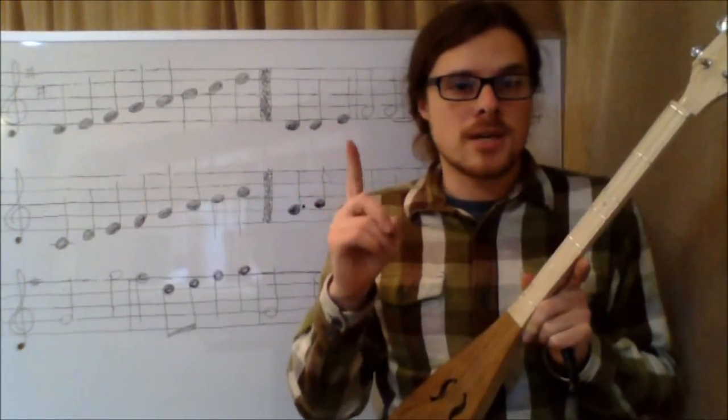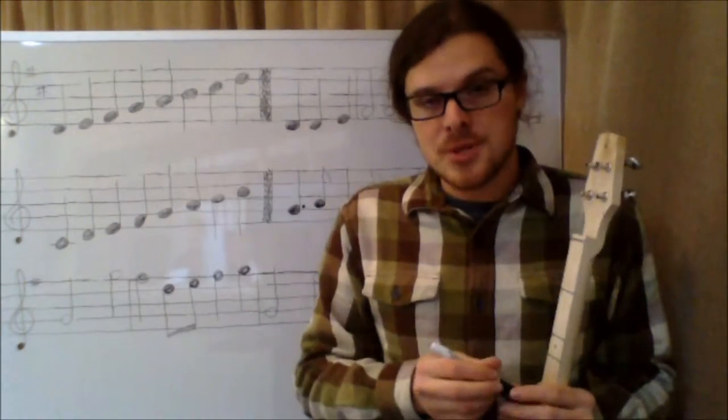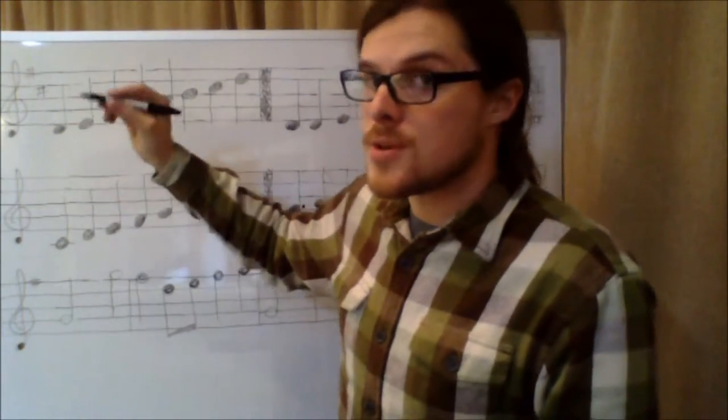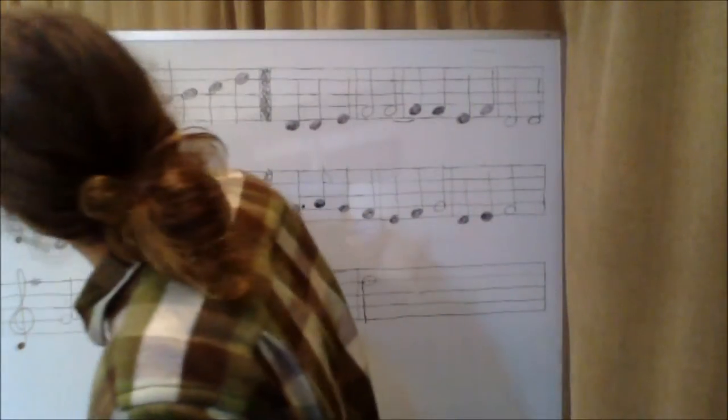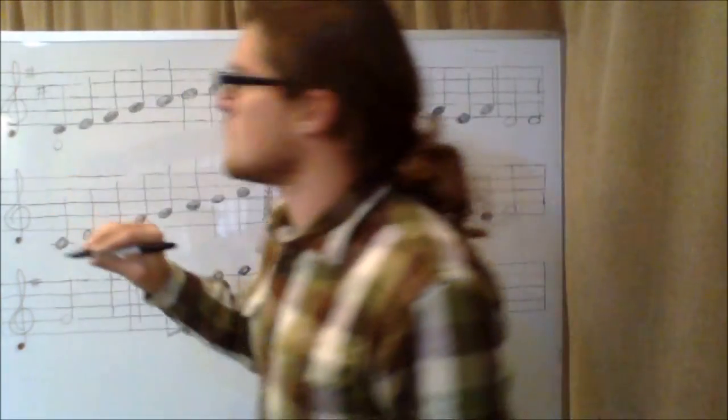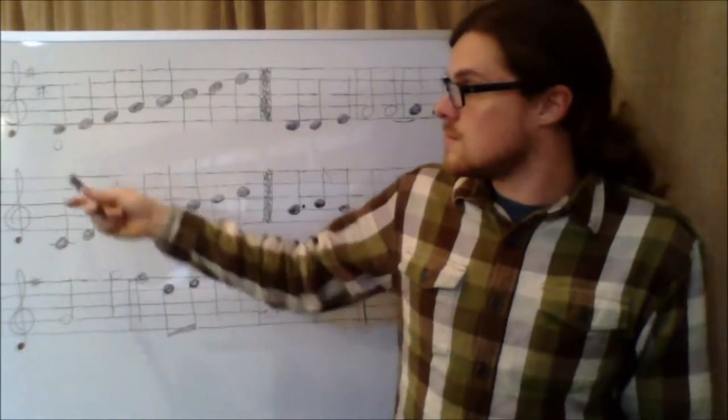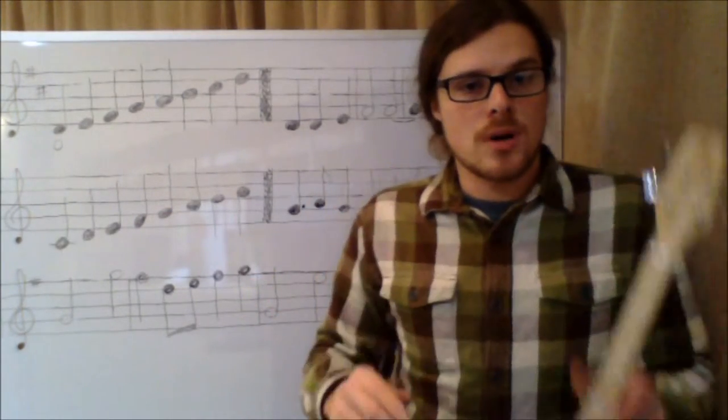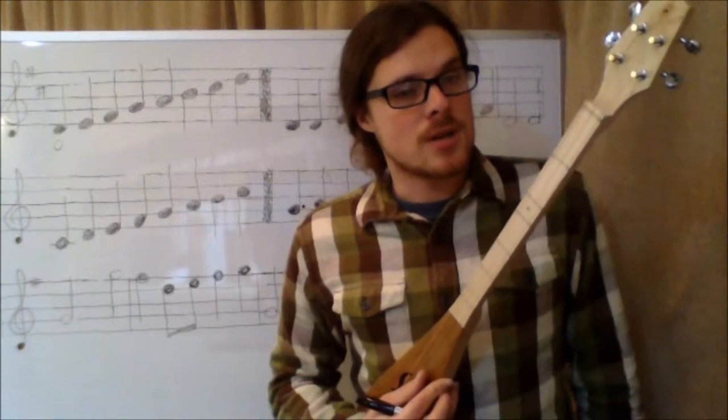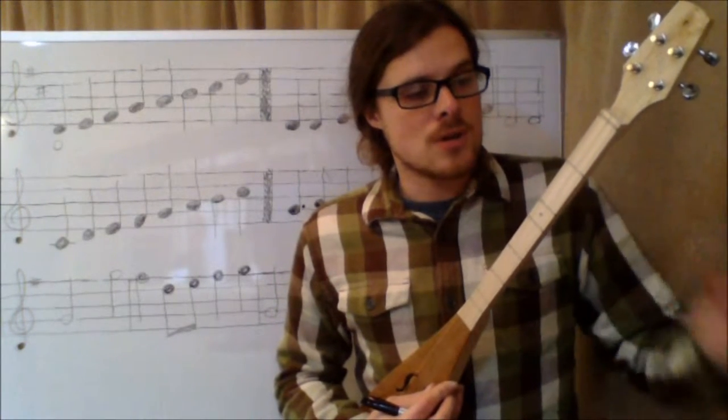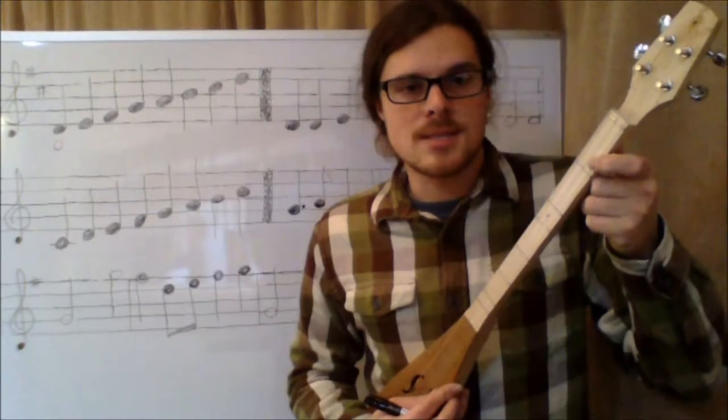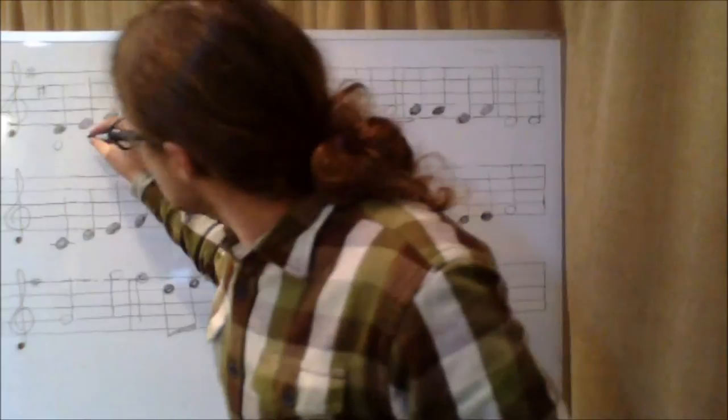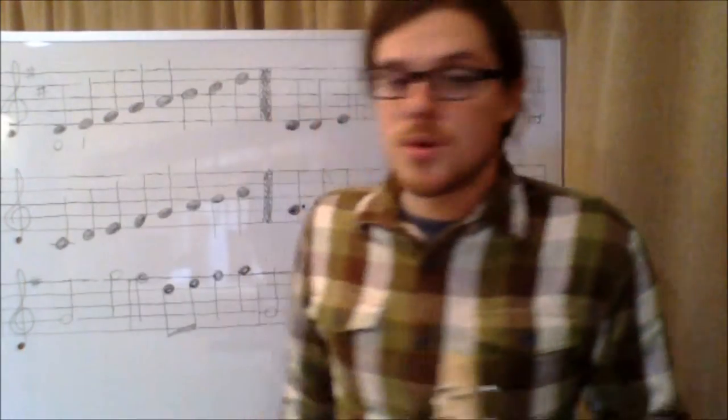So the first note of my scale would be 0. Because when I write tablature, when I write the music, that open strum is just represented by 0. So then the next note of the scale, the second note, or this E, would be represented by the number 1. That's because 0 is the first note. 1 is the second note. Position 1 would be the second note of the scale.